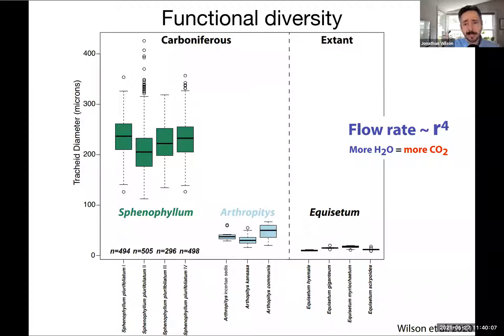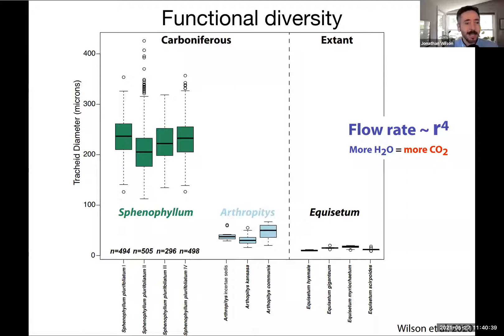Simple anatomical measurements show that even a highly stereotyped lineage like the sphenopsids has cryptic functional diversity within it. Measurements of tracheid diameter across Sphenophyllum, Arthropidae, and Equisetum — including 1,700 measurements made by an undergraduate — reveal striking differences. Remember the fourth power law: a typical Equisetum tracheid with a radius of about 7.5 microns versus a typical Sphenophyllum tracheid with a radius of 100 microns means flow rate through a Sphenophyllum tracheid would be more than 31,000 times higher. Arthropidae is more than 29 times more conductive than Equisetum. Effectively, Sphenophyllum is like a tropical vine, and arborescent calamitalians like Arthropidae are more like tree ferns than like Sphenophyllum — and neither resembles extant Equisetum hydraulically.